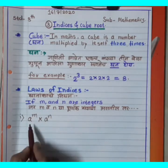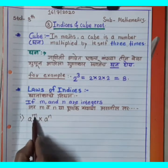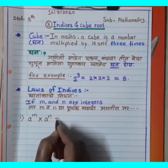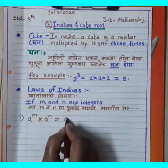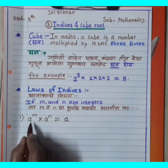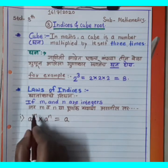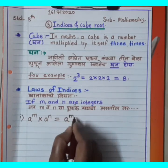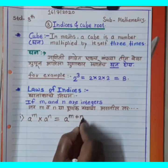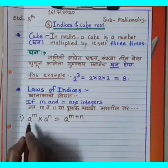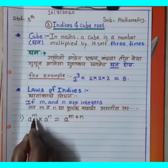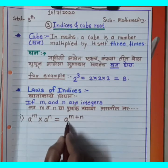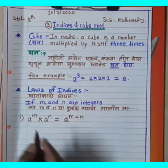First Law: A raise to M multiplied by A raise to N. How to read this? A raise to M into A raise to N is equal to A raise to M plus N. When the base is the same and you multiply, you add the exponents. So A^M × A^N = A^(M+N).